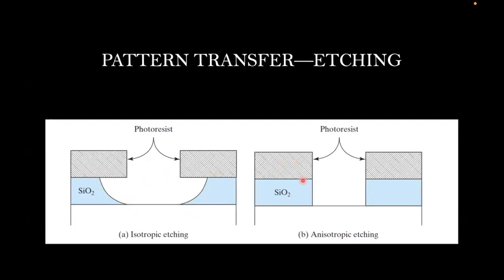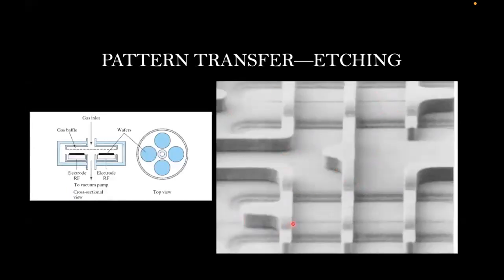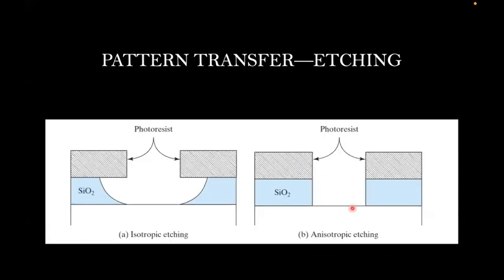Dry etching using reactive ion etching or plasmonic etching results in very sharp edges, as shown in this real SEM — scanning electron microscope — image, where a very sharp oxide layer is clearly visible above the substrate. This is a major advantage of RIE. However, if not carefully controlled in terms of time, reactive ion etching may impact the bottom silicon substrate itself — a disadvantage compared to wet isotropic etching.